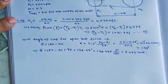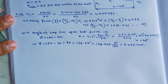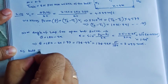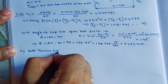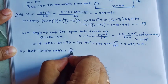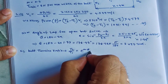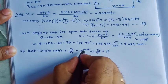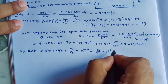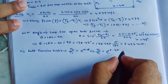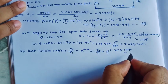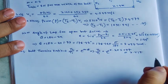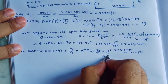Now to find the belt tension ratio. I can write: T2 by T1 equals e to the power mu × theta. So T2 by T1 equals e to the power (0.3 × 3.077). From this, the value will be 2.517.